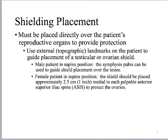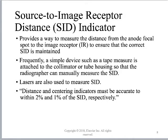SID is significant in reducing patient dose, so we need to know what our SIDs are — which is why having a measuring device when working portably matters. I call these the milk rules: distance and centering indicators must be accurate to within 2% and 1% of the SID respectively. This is an FDA regulation. At a 100-inch SID, the measuring device should read within 2 inches — that's 2% of 100 inches. Centering must be even more precise at 1%, as accurate centering is vital to everything we do in radiography.